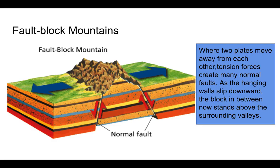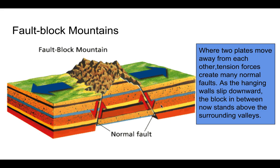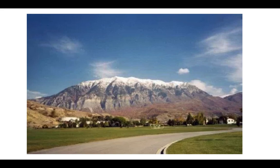Fault block mountains are formed a little differently. They're formed where two plates move away from each other. Tension forces create many normal faults. In this picture, we have two normal faults that have formed. As the hanging walls slip downward, the block in between now stands above the surrounding valleys. So this block of rock is not being pushed upward — the hanging walls on both sides are slipping downward. The fault block mountain looks something like this.